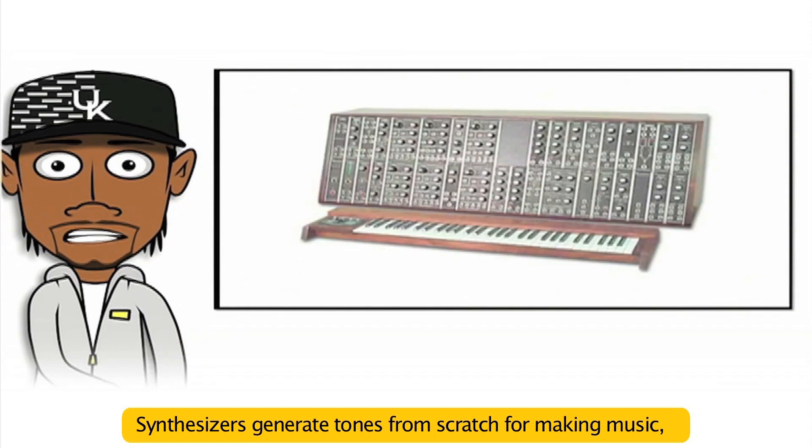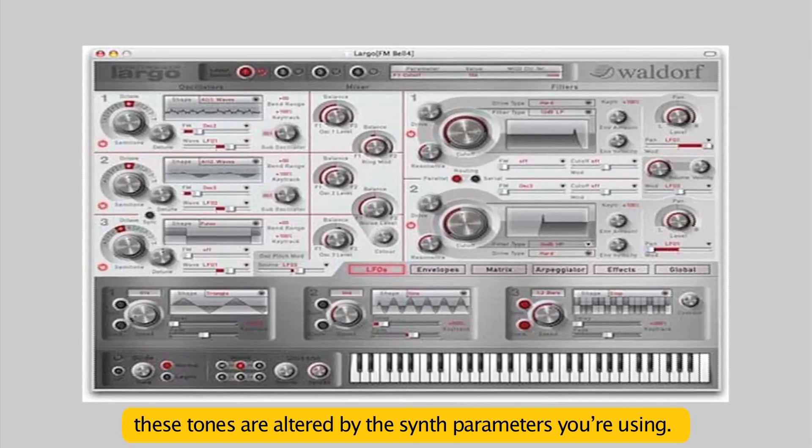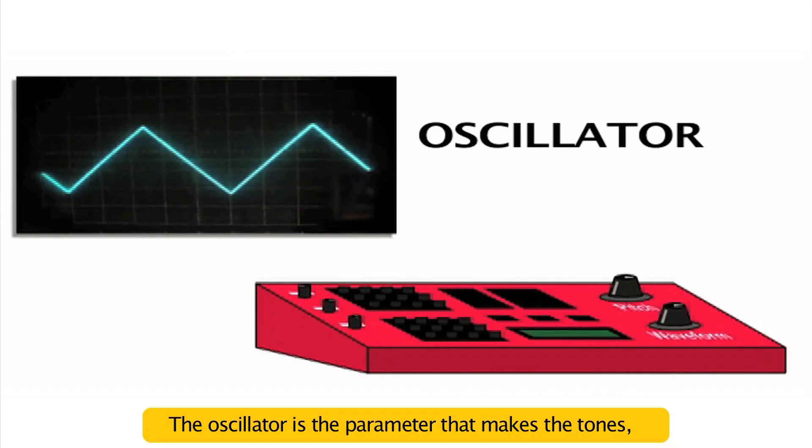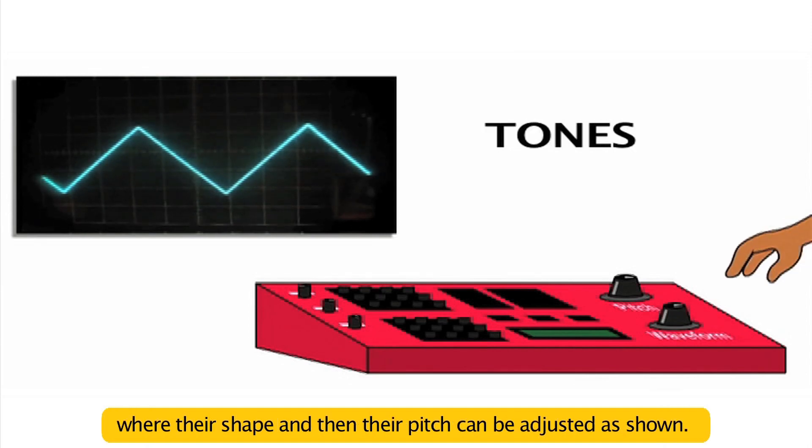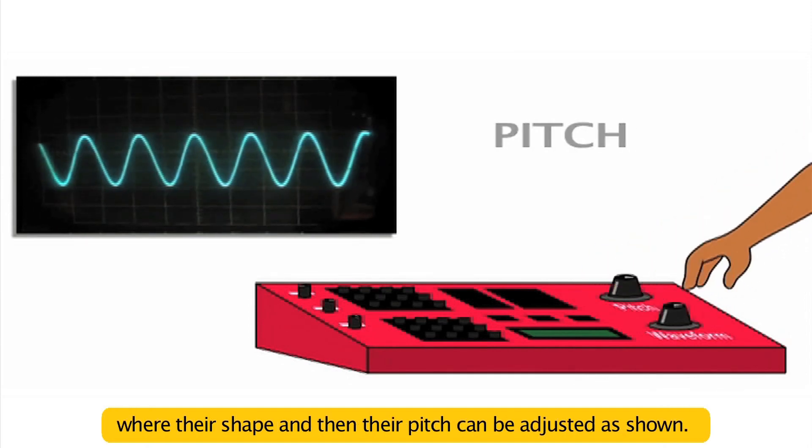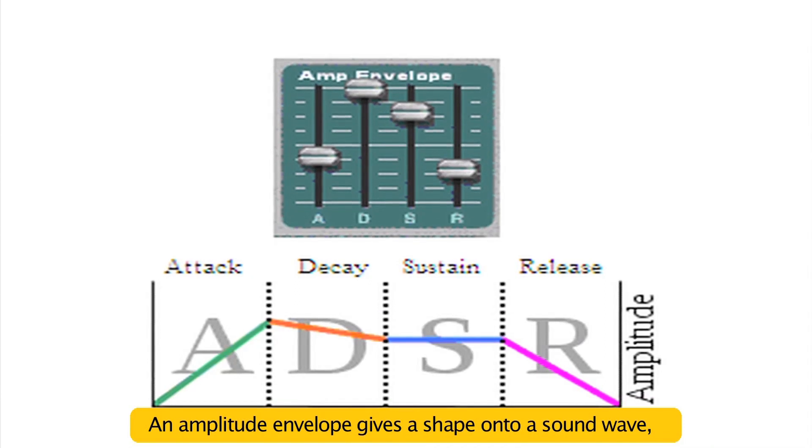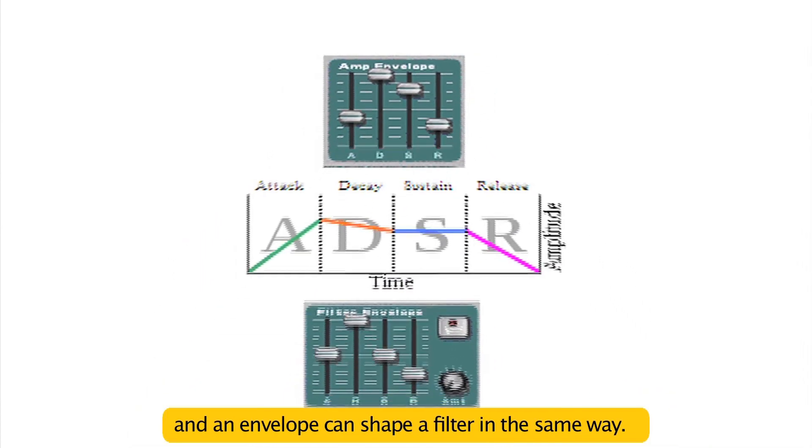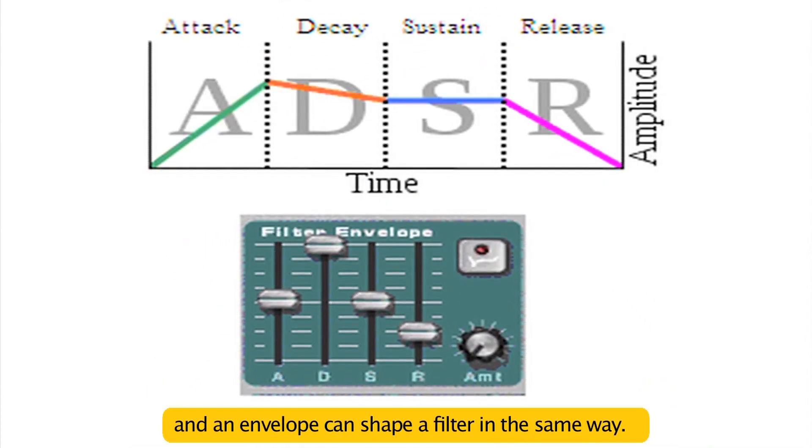Synthesizers generate tones from scratch when making music. These tones are altered by the synth parameters you're using. The oscillator is the parameter that makes the tones, where their shape and then their pitch can be adjusted as shown. An amplitude envelope gives a shape onto a soundwave, and an envelope can shape a filter in the same way.